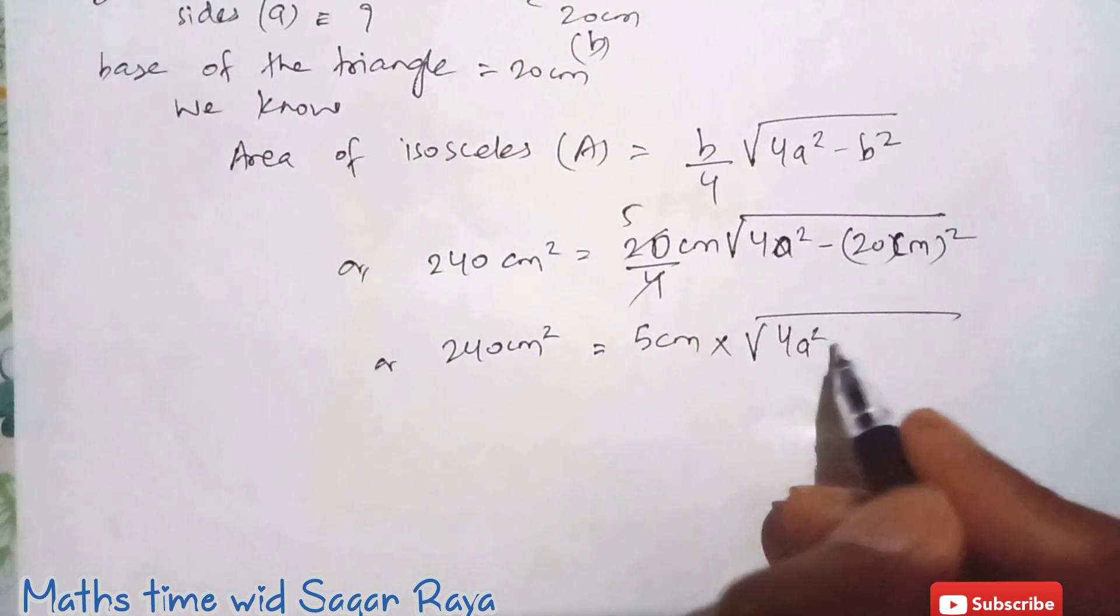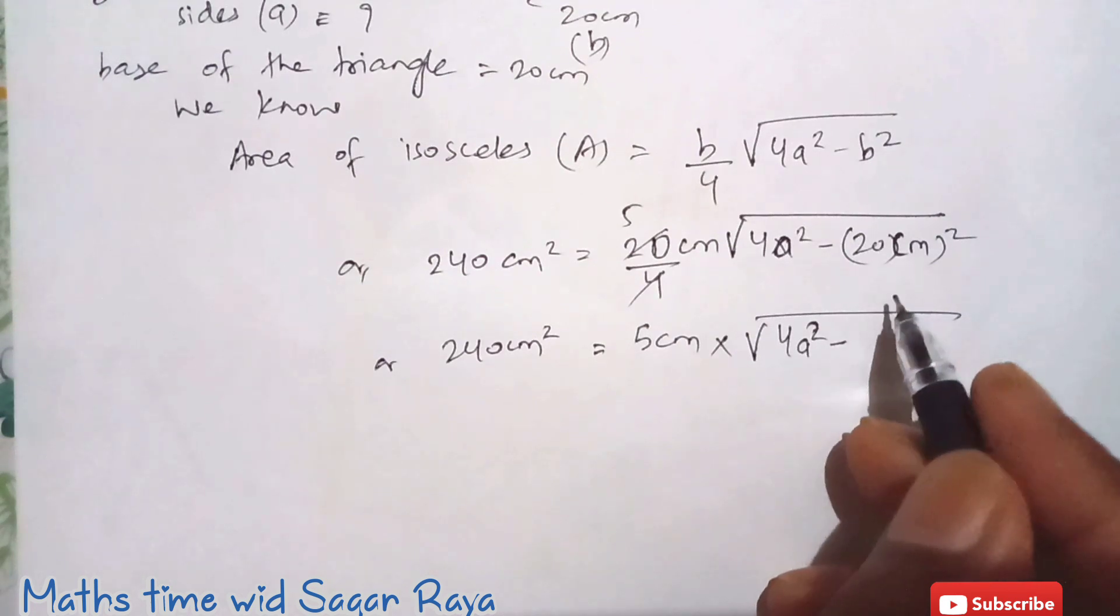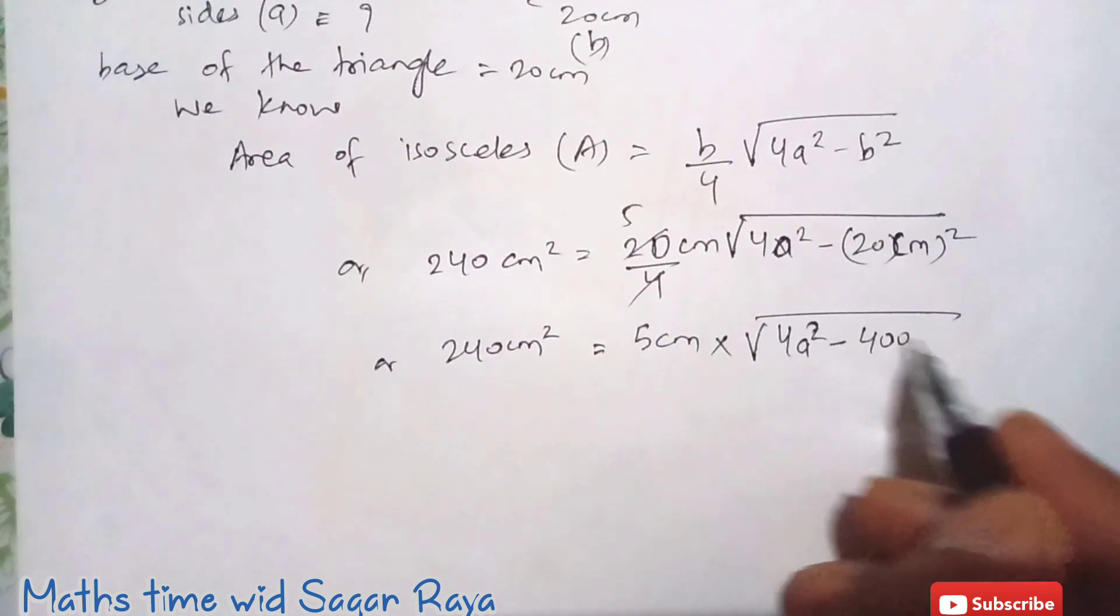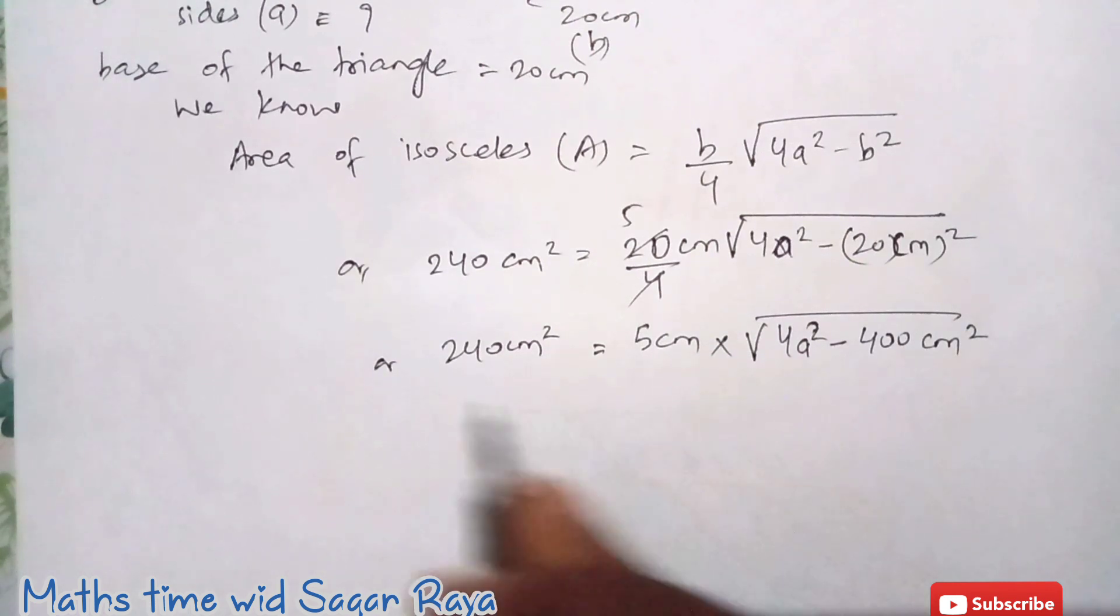And then 240 cm square equals to, if you just cancel this it will be 5, so 5 cm into root under 4a square minus 20 cm all square. So square of 20 is 400 and cm if you just square it it will become cm square.